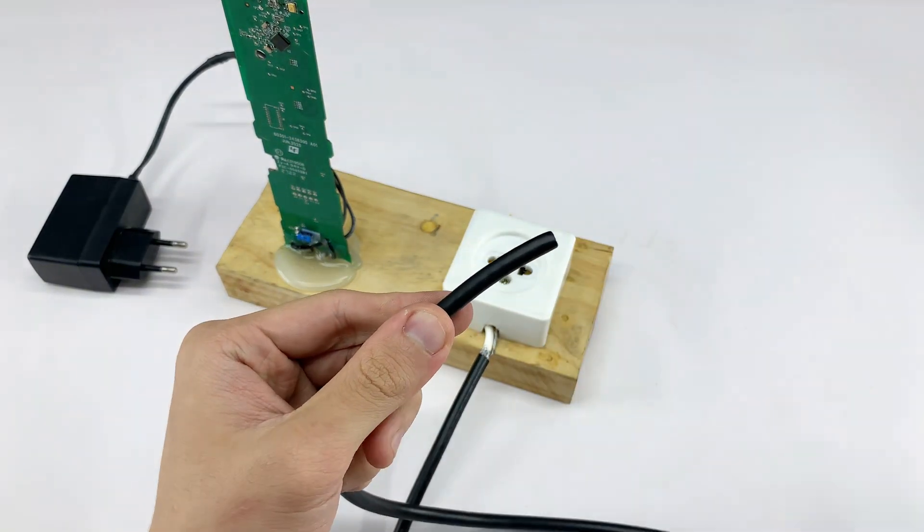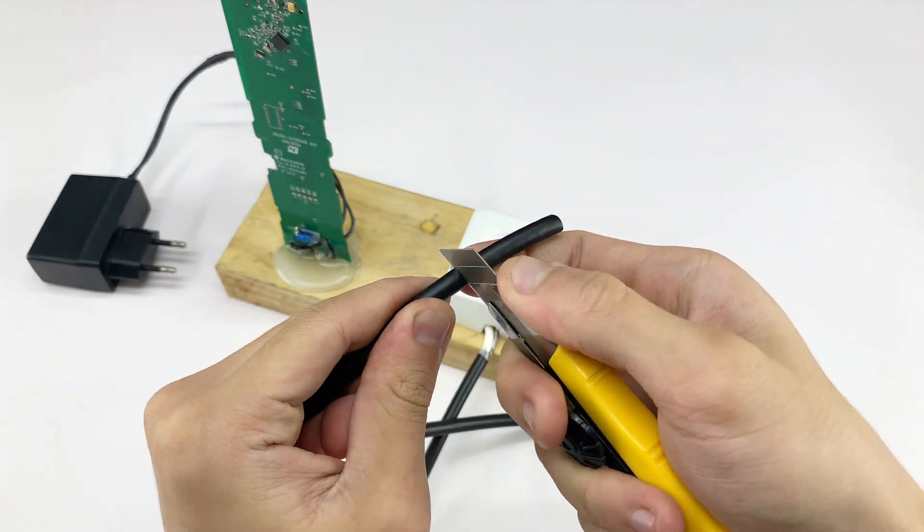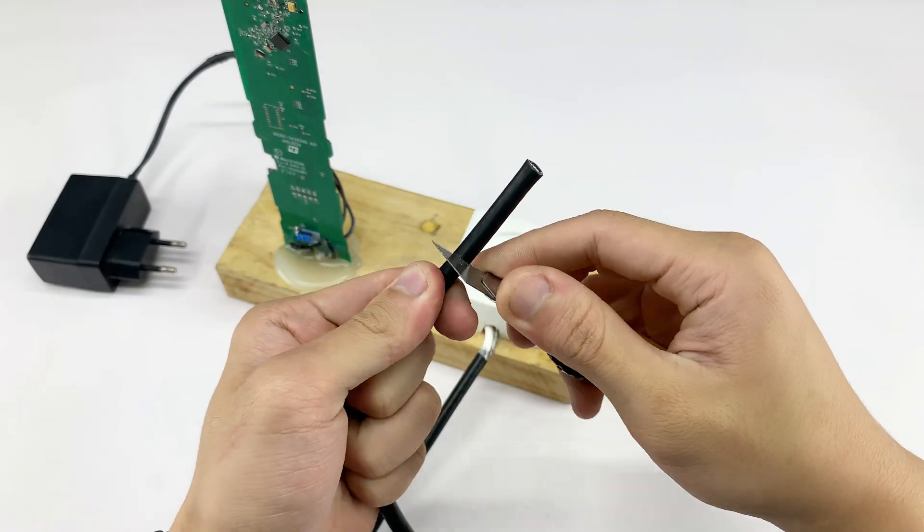Finally, I'm stripping the other end of the coaxial cable and attaching a coaxial F connector, carefully twisting and securing it in place.